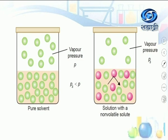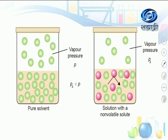Let the vapor pressure of the pure solvent be P, and the vapor pressure of the solution be Ps. So Ps is less than P, meaning the vapor pressure of a solution is less than that of the pure solvent — provided the solution contains a non-volatile solute.